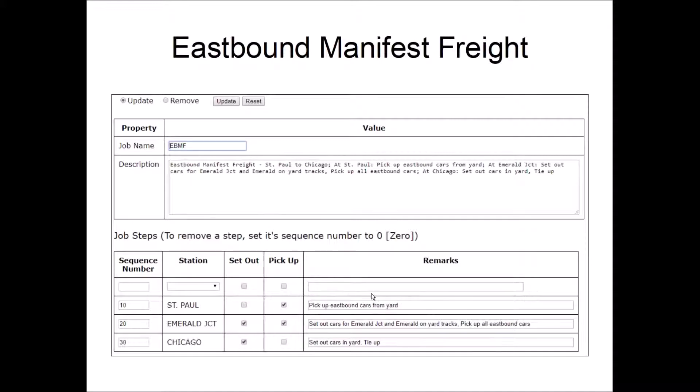Then at Emerald Junction, it both sets out and picks up. Because it sets out cars that are headed for either Emerald Junction or Emerald. And it picks up eastbound cars. Then when it gets to Chicago, it sets out all the cars in its train and the crew ties up.